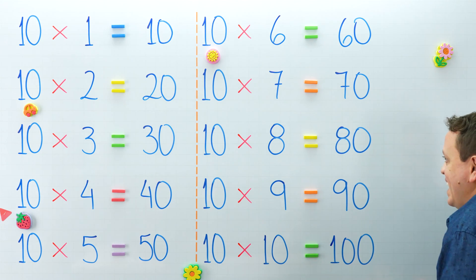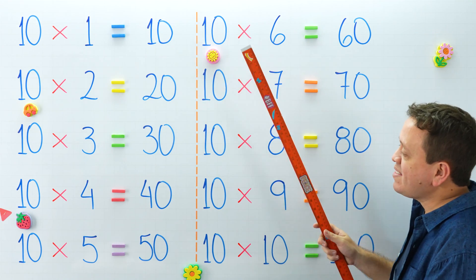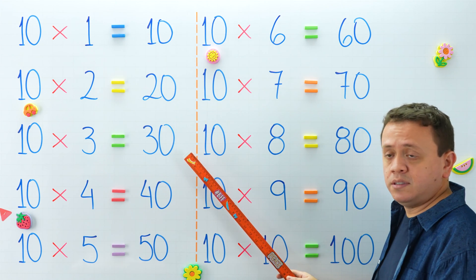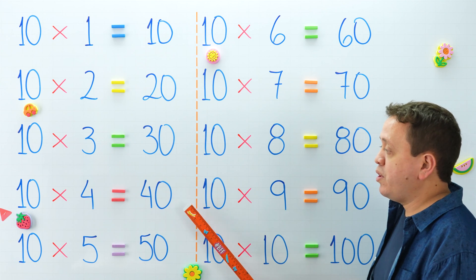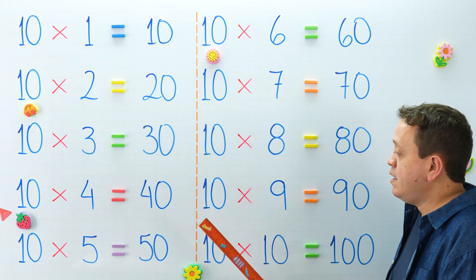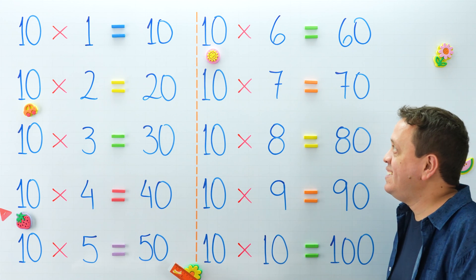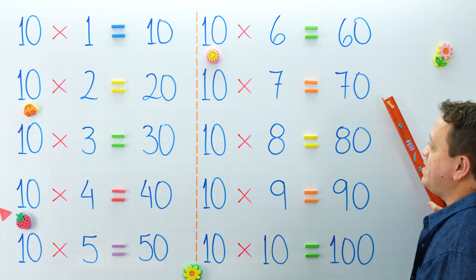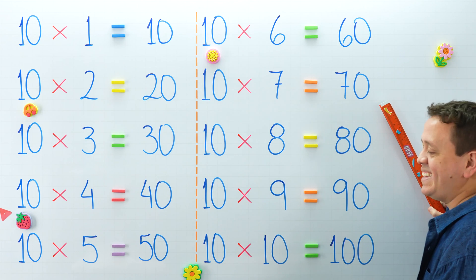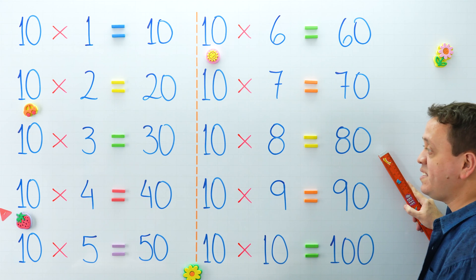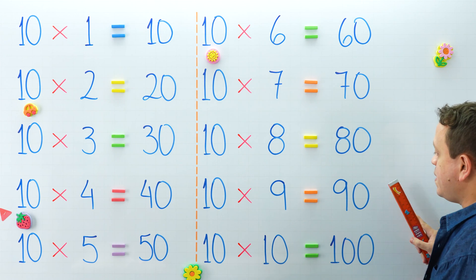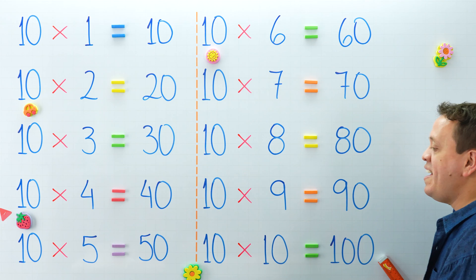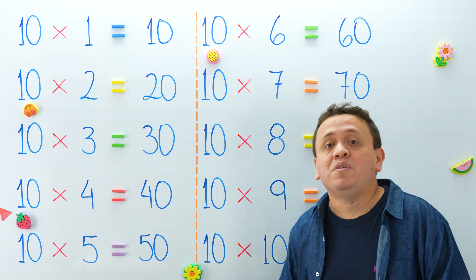Why don't we check the products again? 10 times 1 equals? And 10 times 2 equals? What about 10 times 3? And 10 times 4 is equal to? 10 times 5 equals? 10 times 6 equals? 10 times 7 is equal to 70. Good. 10 times 8 equals? 10 times 9 equals? Finally, 10 times 10 equals 100. Yes, 100. And we finish with our multiplication tables.